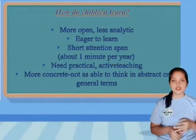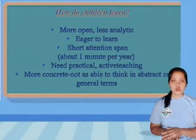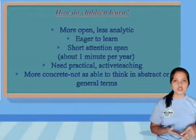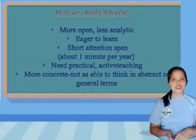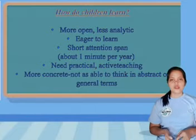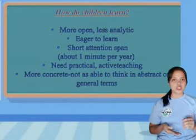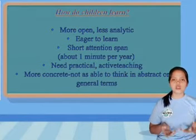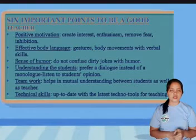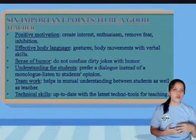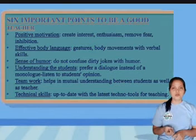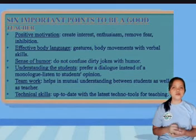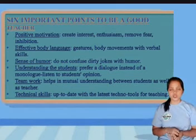How do children learn differently than adults? Children are more open and less analytic. They are eager to learn but have short attention spans. They need practical, active teaching and more concrete approaches — they are not as able to think in abstract or general terms. These are the six important points to being a good teacher with children. First, positive motivation — it creates interest, enthusiasm, and removes fear and inhibition. Second, effective body language — gestures and body movements combined with verbal skills.